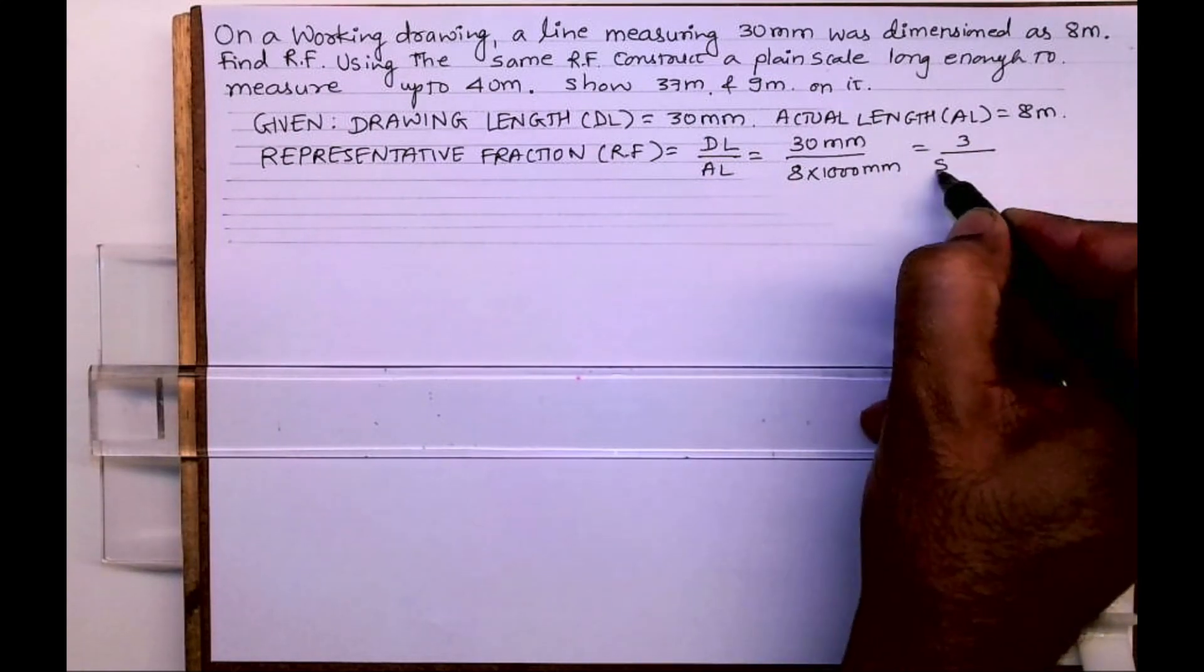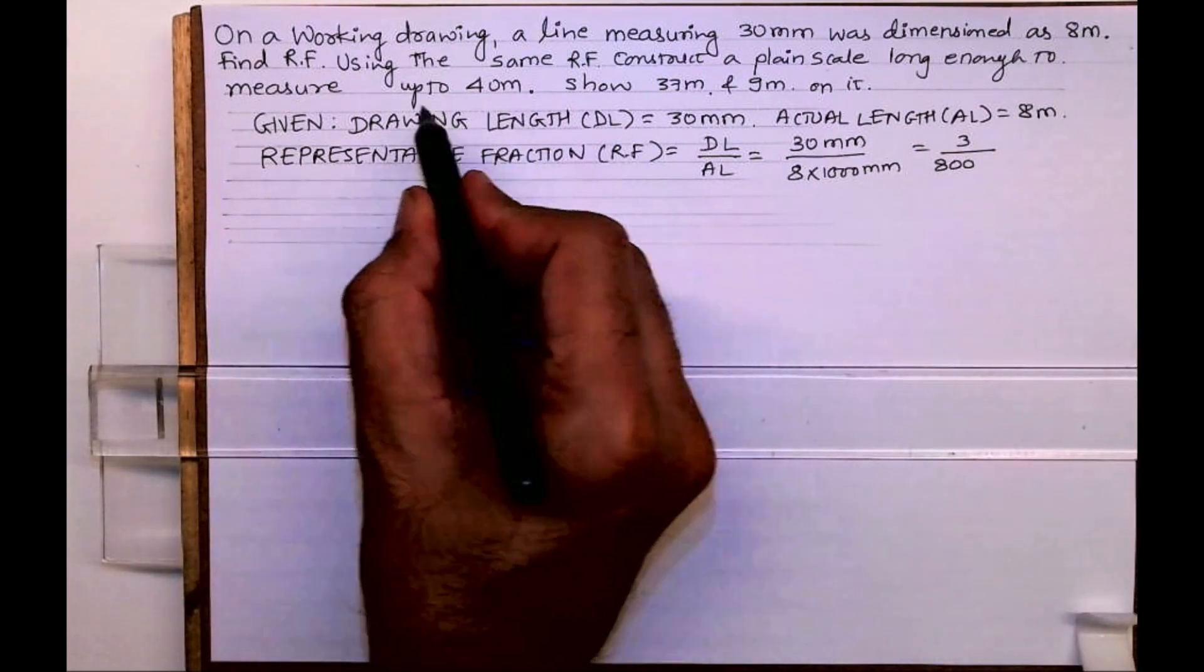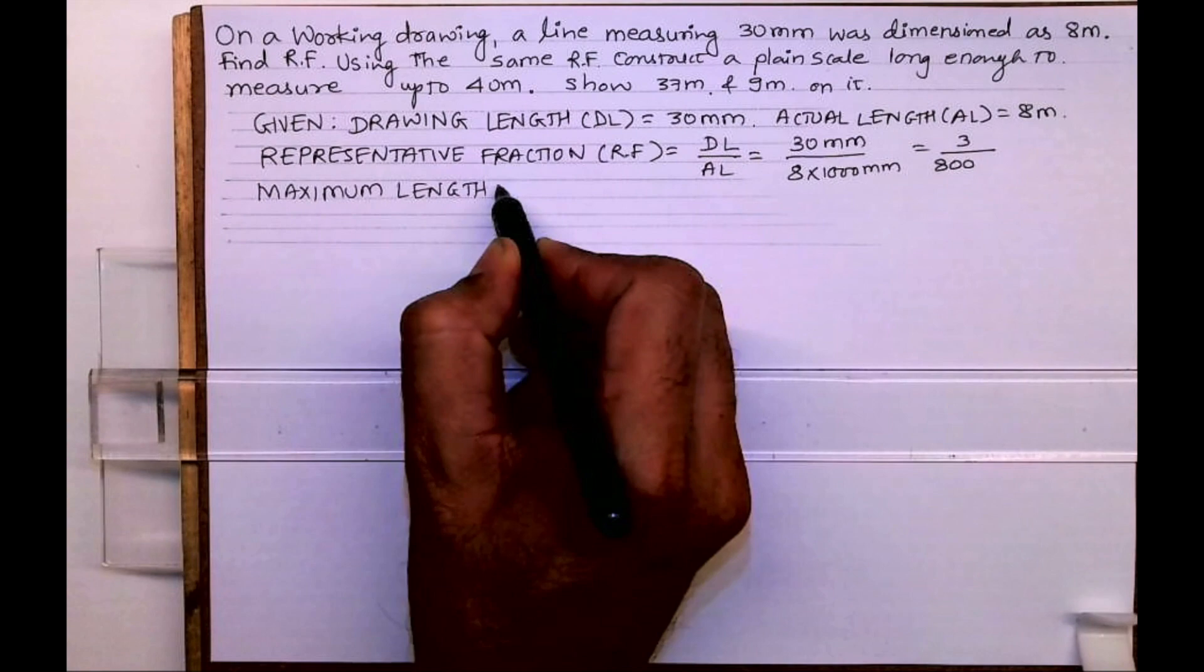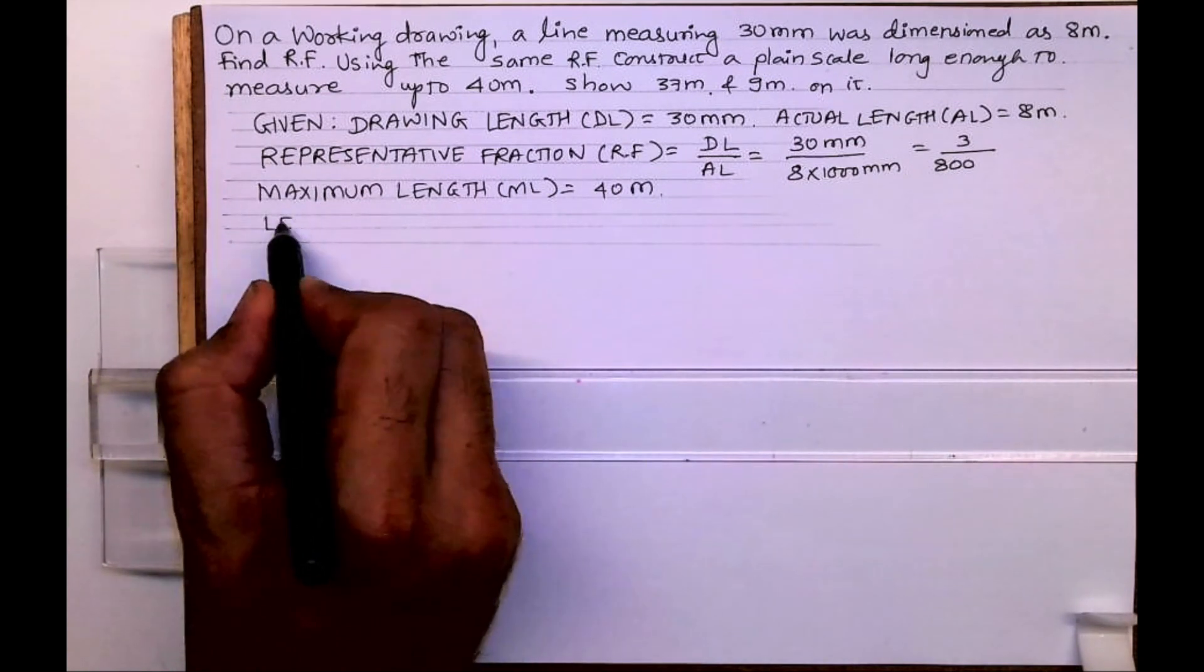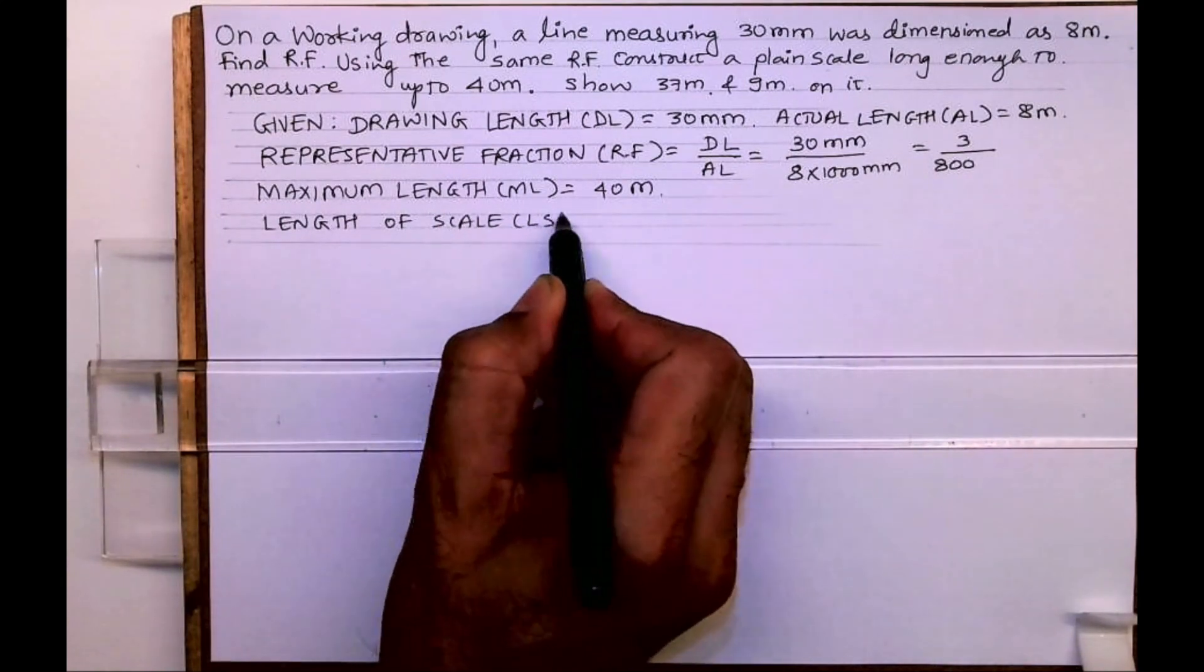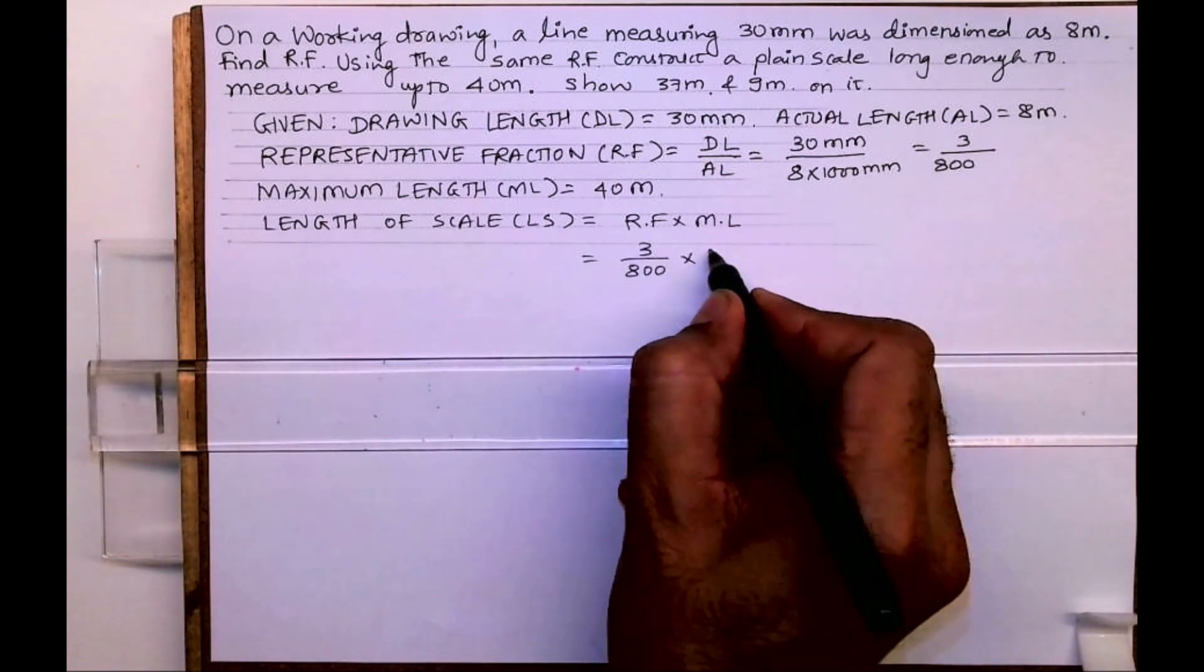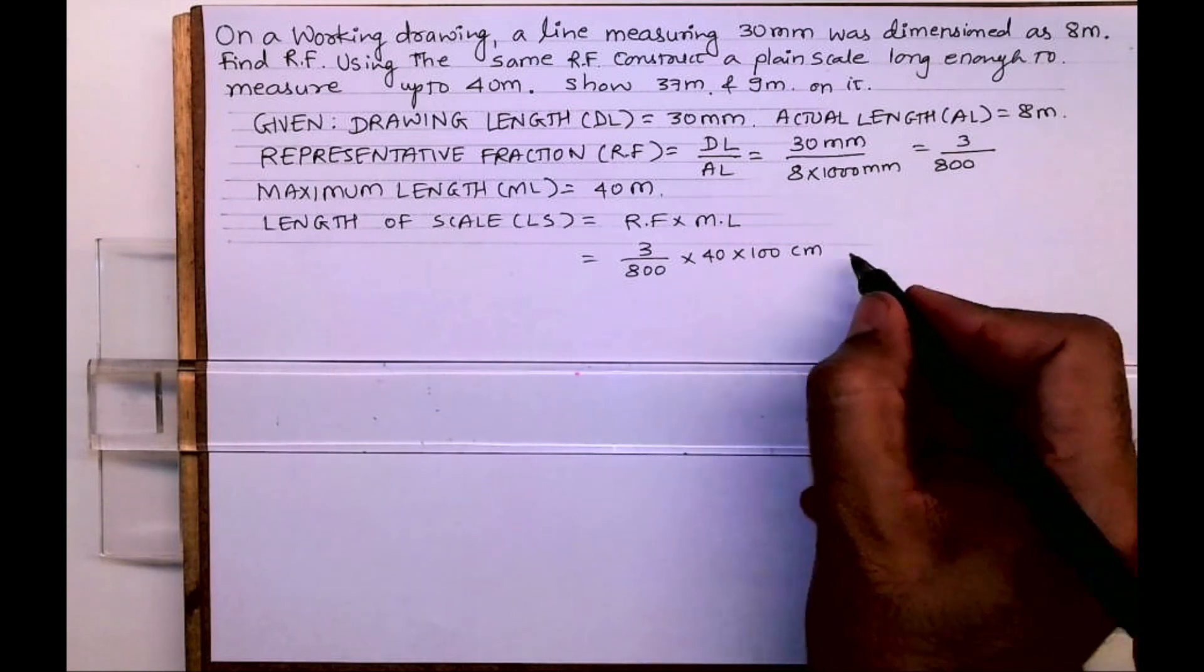Now maximum length is 40 meter. We know the formula length of scale is equal to RF into ML. So RF is 3 upon 800 into maximum length, that is 40 into 100, so this will be 15 centimeter.